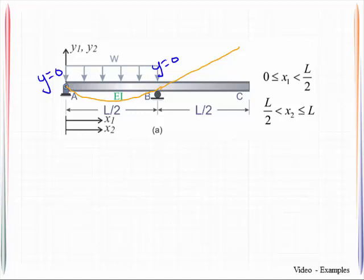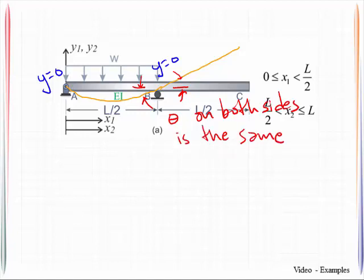Now one of the difficulties we have here is that we do not know the slope anywhere on this beam. But what we can do is we can look at the rotation on both sides and we can acknowledge that theta on both sides is the same. And because of that, we should be able to now write boundary conditions based upon this.